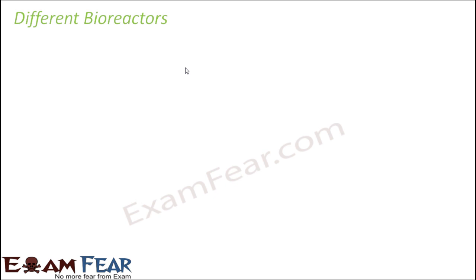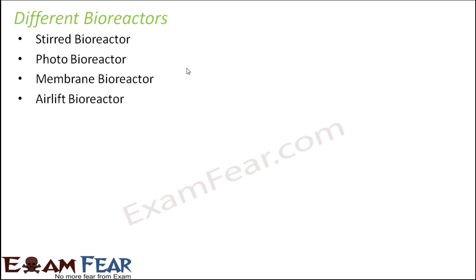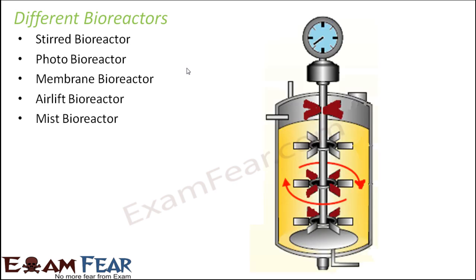There are different types of bioreactors: stirred bioreactor, photo bioreactor, membrane bioreactor, airlift bioreactor, mist bioreactor, and many others. Their main purpose is the same - to provide an environment where culture can be grown so desired products can be formed - but they differ in structure and the form of energy they use. Here we will just touch upon the stirred bioreactor.